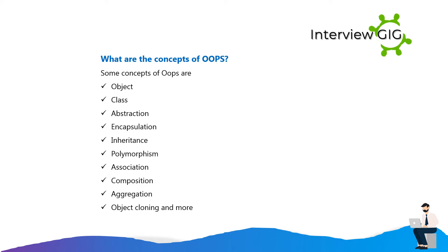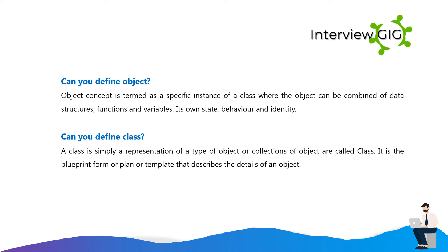What are the concepts of OOPS? Some concepts of OOPS are: Object, Class, Abstraction, Encapsulation, Inheritance, Polymorphism, Association, Composition, Aggregation, and Object Cloning.